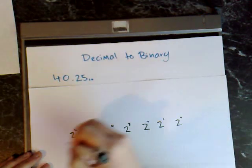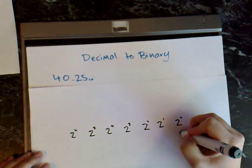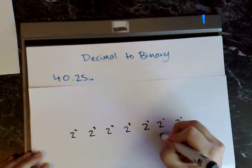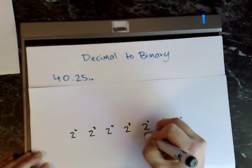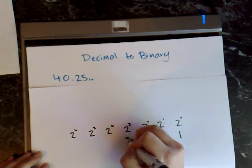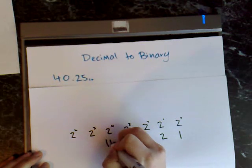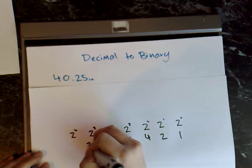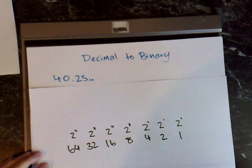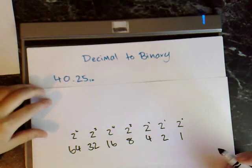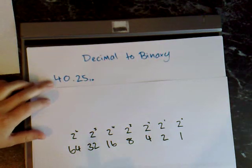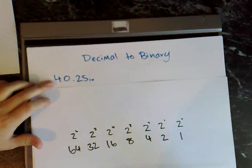Working these out: 2 to the power of 0 equals 1, then 2, 4, 8, 16, 32, and 64. We stop here because 64 is larger than the number we want to convert.